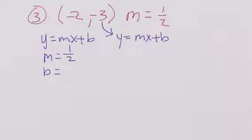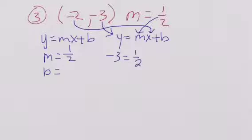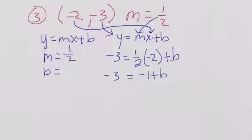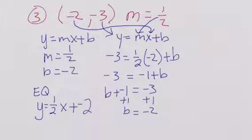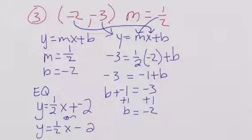My y is negative 3, my m is 1 half, and my x is negative 2. So negative 3 equals 1 half times negative 2 plus b, which gives negative 3 equals negative 1 plus b. b is not on the left, so symmetrical: b plus negative 1 equals negative 3. Pair out the 1, so b equals negative 2. My equation is y equals 1 half x plus negative 2, or y equals 1 half x minus 2. Those are both my answers.